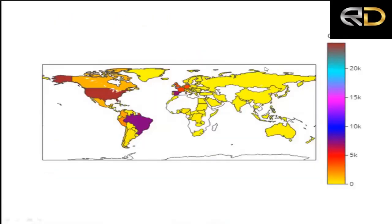This heat map shows confirmed cases globally, ranging from 0 to 20,000 and above. Most of the globe shown in yellow has no incidence. According to the color scale, we can identify the regions with the highest concentration of monkeypox cases.